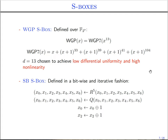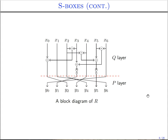The second s-box is the SB s-box, defined in a bitwise and iterative fashion similar to the 4-bit and 8-bit s-boxes of the SKINNY block cipher. It consists of two steps: first we apply a round function R five times, followed by a nonlinear function Q. Then we complement the first and second components of the 7-bit word. The nonlinear layer Q consists of three AND gates, three XORs, and two NOTs on bits x3 and x5, followed by a bitwise permutation layer.